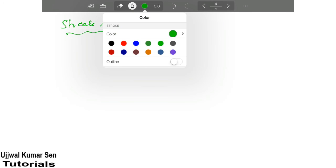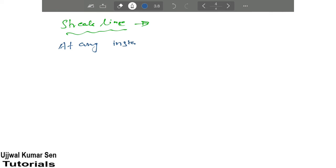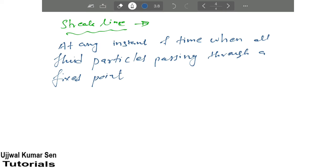What is the definition of streak line? At any instant of time, when all fluid particles passing through a fixed point, the path followed is known as streak line.